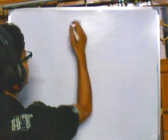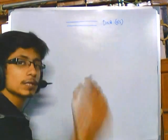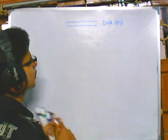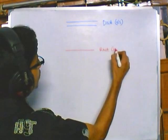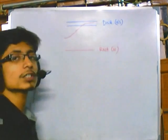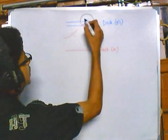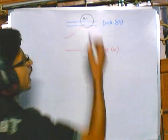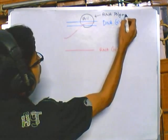In prokaryotic transcription, the process remains the same — we have double-stranded DNA, and from this double-stranded DNA we produce RNA, which is single-stranded. The production of RNA from DNA is the process called transcription, and it needs an enzyme to carry it out — the RNA polymerase.